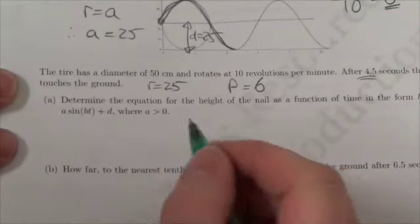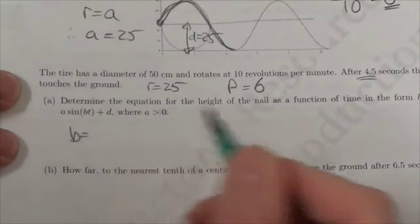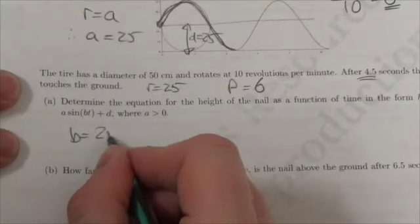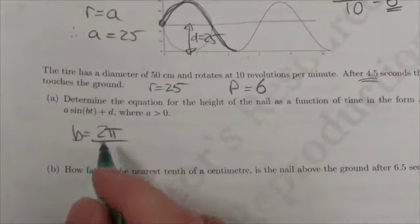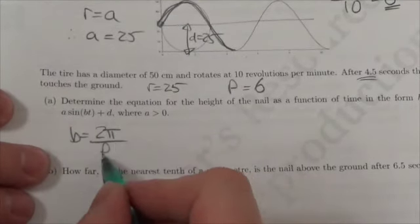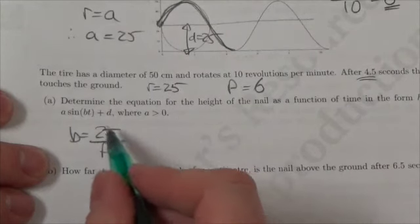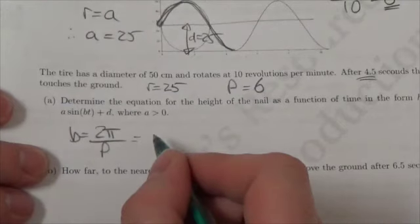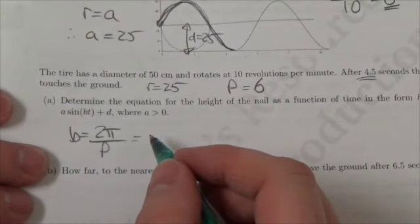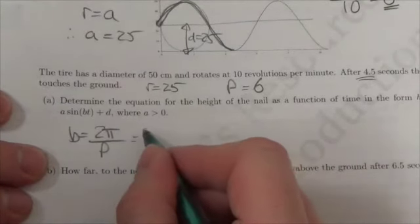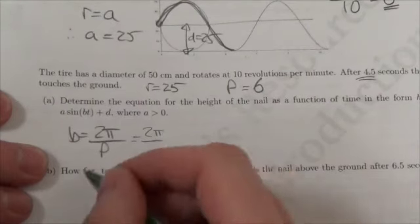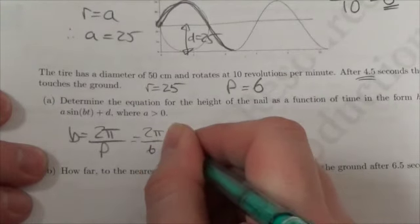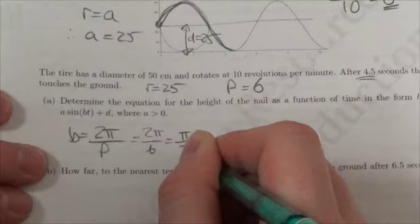So the only thing that I'm really missing in this case here is b. I don't know what b is yet. However, I do know the period. I'm going to make this 2 pi over period to find the b. Word problems should always be in radians. I'm not even going to consider what it would look like in degrees. This will be 2 pi over, my period is 6, so my b value is pi over 3.